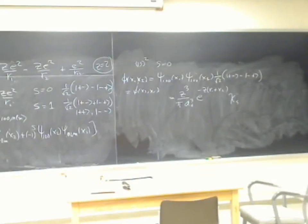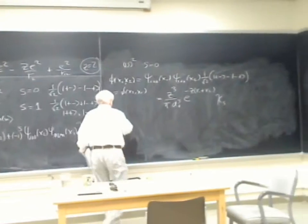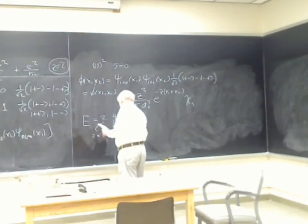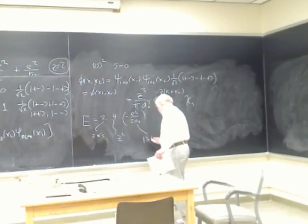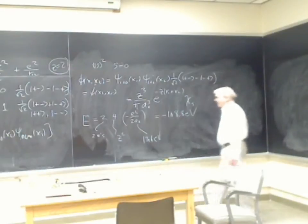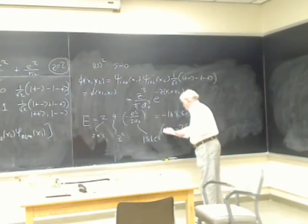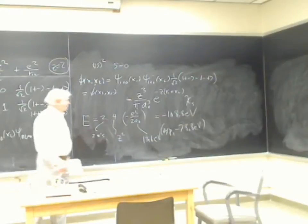We can compute the energy. For H₀, the energy is simply twice — two electrons, a factor of Z² = 4, then minus E²/2a₀, and this quantity is 13.6 eV. Multiplying it out gives minus 108.8 eV, while the experimental answer is minus 78.8 eV. So just zeroth-order gives an answer off by a factor of about 30 percent.